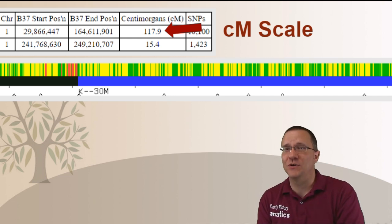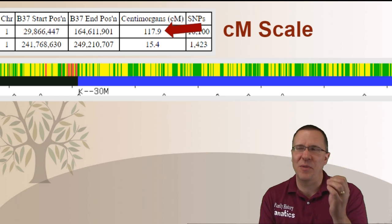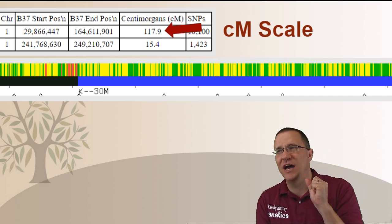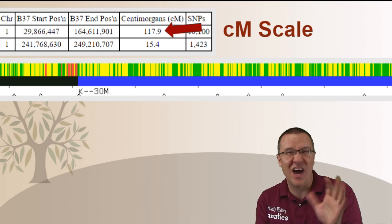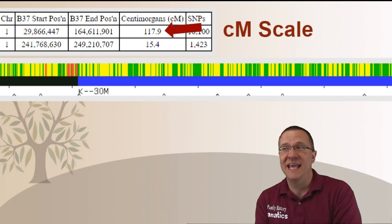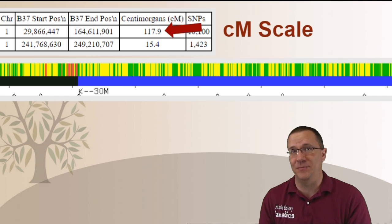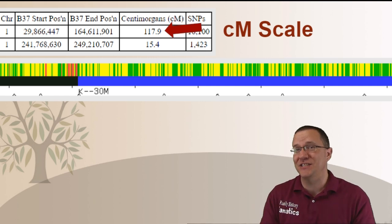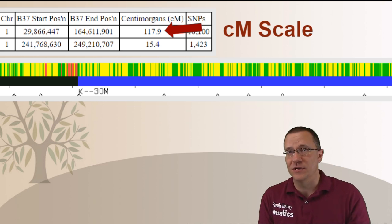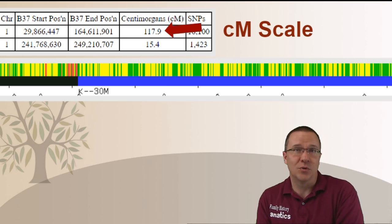So there are about two centimorgans for every megabase in that segment. On the other hand if I look at the very first segment I see that it is going from about 30 megabases to 164 megabases. So about 130 megabases long and there's 117.9 centimorgans. There is actually less than one centimorgan for every megabase over that segment. And so you can see that even just on this chromosome number one the amount of centimorgans per megabase varies from below one to two or more centimorgans per megabase.